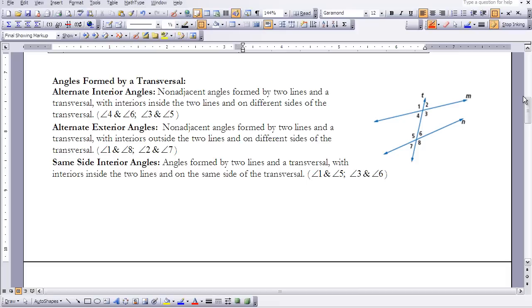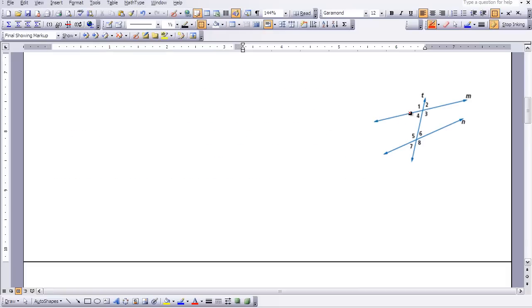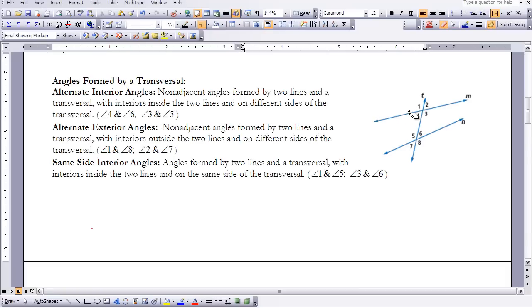Okay, we have some more angles to identify when you have two lines being intersected with a transversal. We also are going to add what we call alternate interior angles. So that would be angle 4, and angle 6, angle 3,